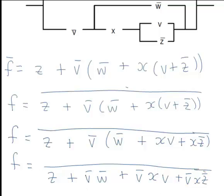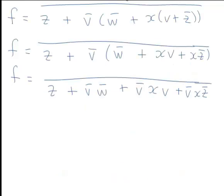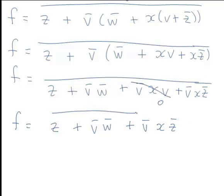All with the bar over the top. The main simplification we could do here is a term with both V bar and V in it. So V bar times V that will just become zero. So our expression F is Z plus V bar W bar plus V bar XZ bar, all with a bar on top.